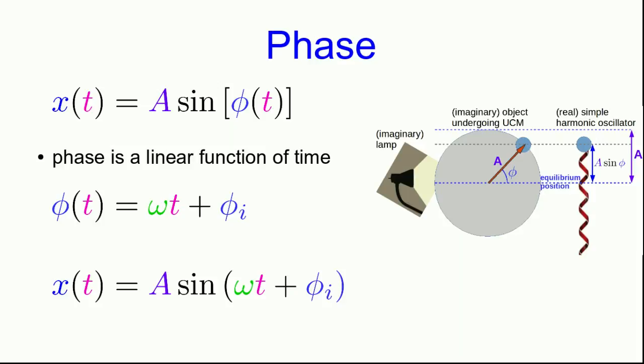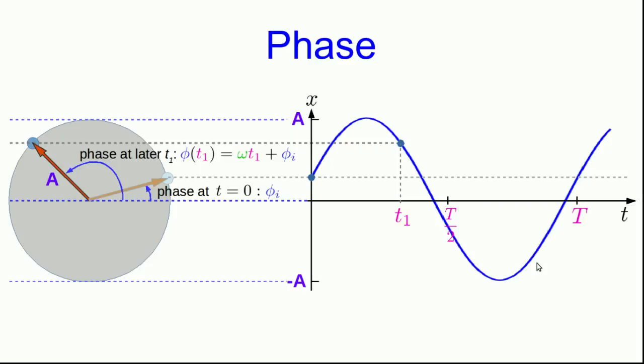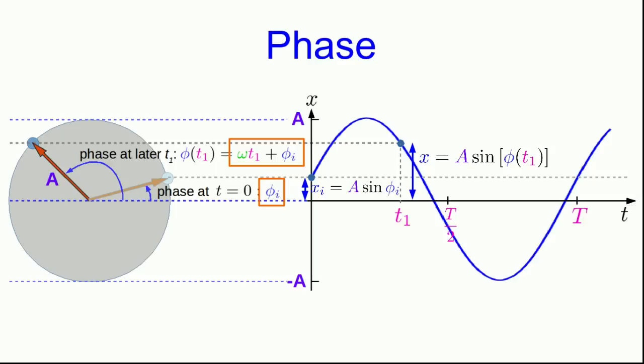So there is our position as a function of time for a simple harmonic oscillator — a sinusoidal function, as seen experimentally. The reference circle relates to the graph of position versus time: at initial phase phi_i, the position is A sine phi_i. At a later time, when the phase is omega t plus phi_i, the position is A times sine of that new phase. One full cycle returns the oscillator to its original position, corresponding to the phasor going one full turn around the circle.